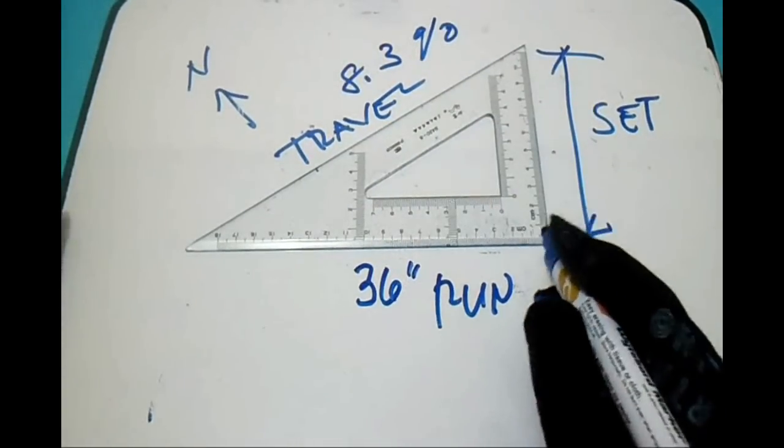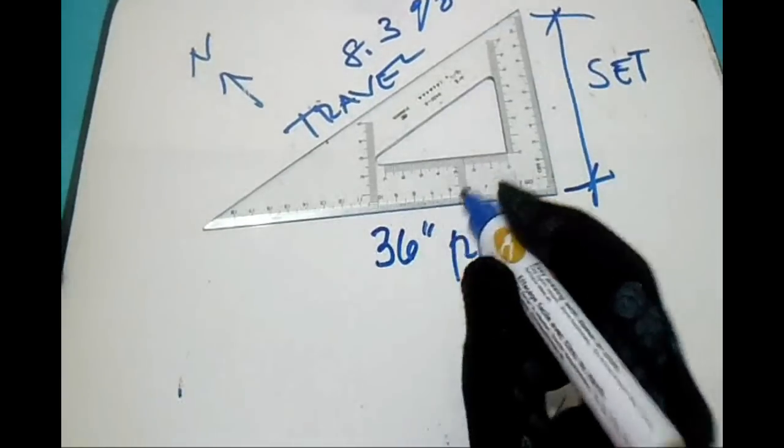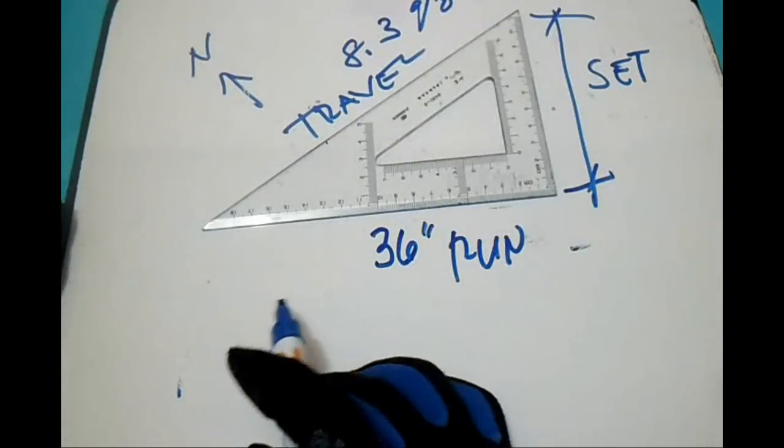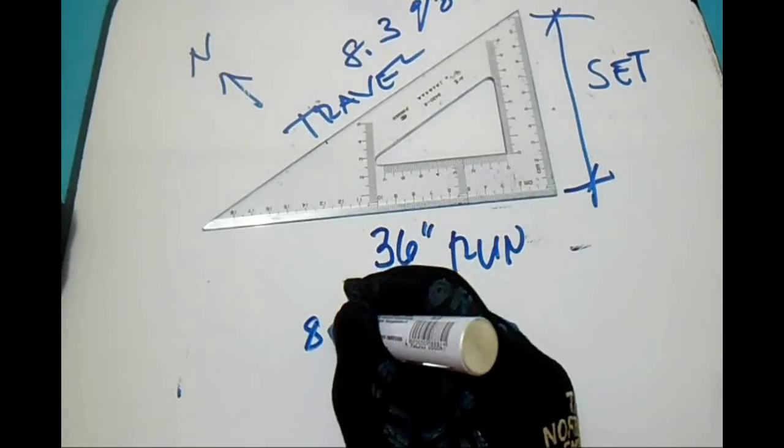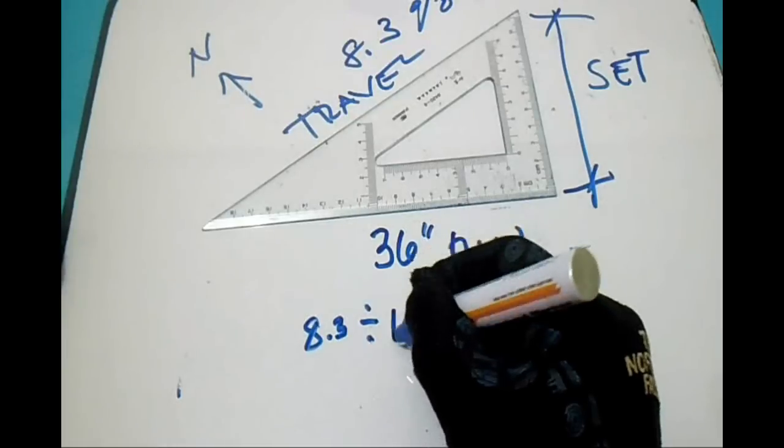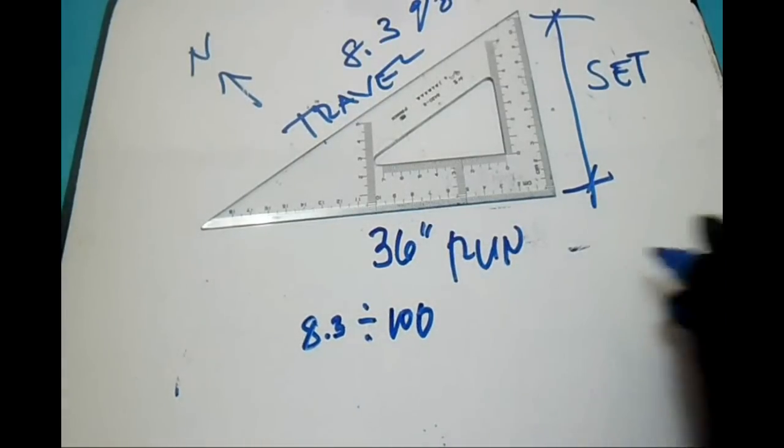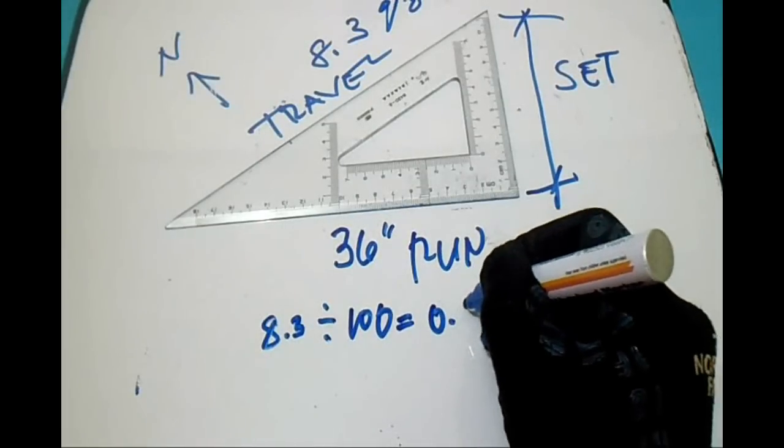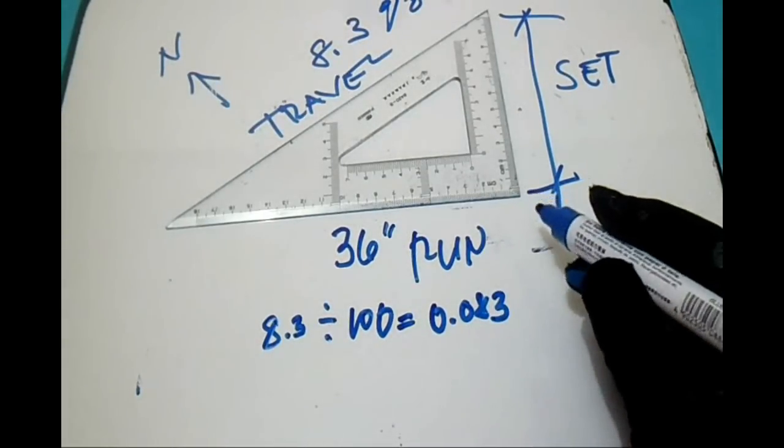To find this slope, let's compute: 8.3 divided by 100, and the answer is 0.083.